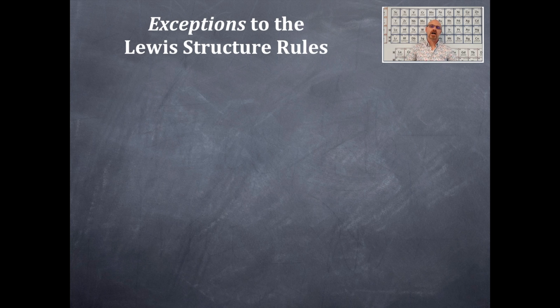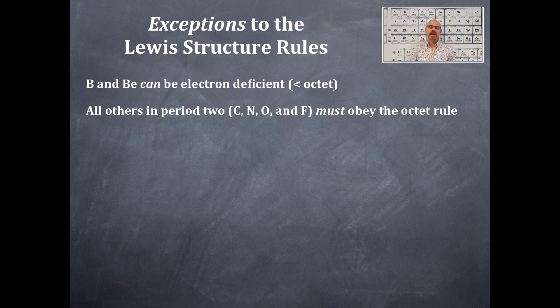So, let's talk about those two major exceptions to the Lewis dot structure rules. First, number one is boron and beryllium can be electron deficient. That means that they can have less than an octet and you're going to be just fine and move on.